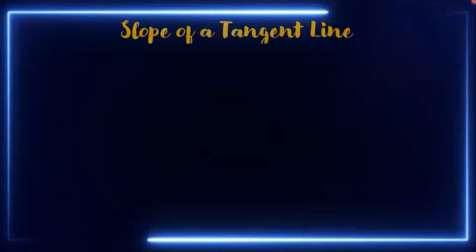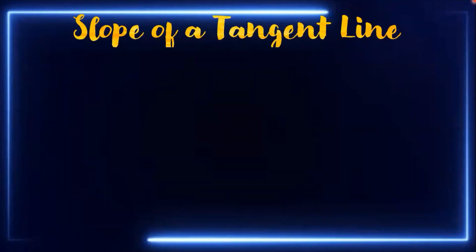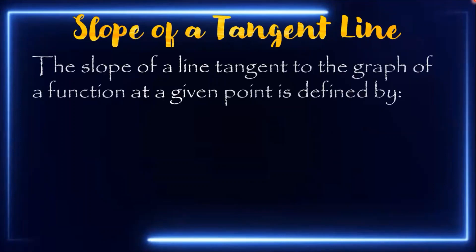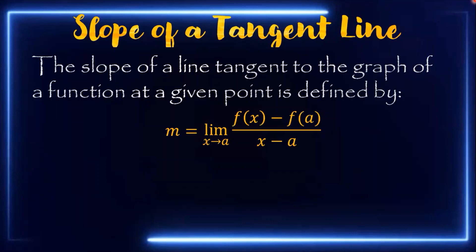Good day everyone. Today I am going to discuss a new lesson about solving for the slope of a tangent line. Last time, we discussed the first method in solving for the slope of a tangent line, which involves delta. This time, I am going to discuss the other method. The slope of a line tangent to the graph of a function at a given point is defined by the limit definition of the slope: the limit of f(x) minus f(a) all over x minus a, as x approaches a.